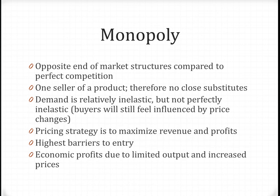The last type of market structure is called a monopoly. Monopolies are basically the opposite of perfect competition. There is only one company or firm that basically controls the entire market. They are the only or the main seller of a product, and therefore there aren't any real substitutes. The demand is inelastic because they have so much power that buyers can really only buy from them. However, it's not perfectly inelastic because buyers will still feel influenced by price changes. Monopolies use pricing strategies to maximize revenues, and also have the highest barriers to entry. They will almost always have economic profits because monopolies will limit output and increase prices to maximize profits. An example of a monopoly is AT&T before it was broken up, as they controlled the entire U.S. telecom industry.